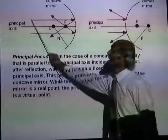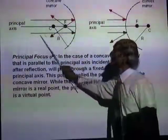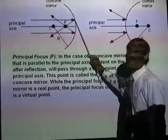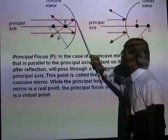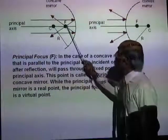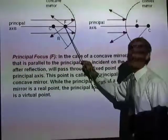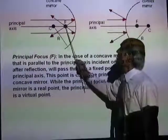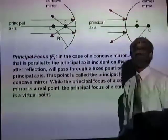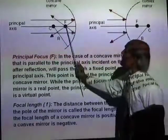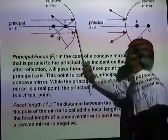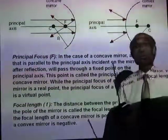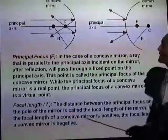If you allow a set of parallel light rays to hit the mirror, after reflection the reflected rays will pass through a point on the principal axis called the principal focus, represented by the letter F. The distance from the principal focus to the mirror is called the focal length of the mirror. A mirror is characterized by its focal length.